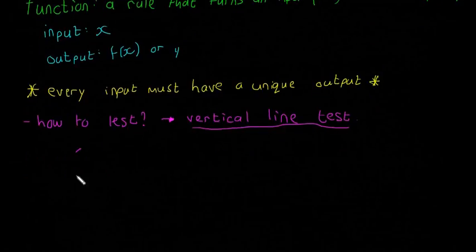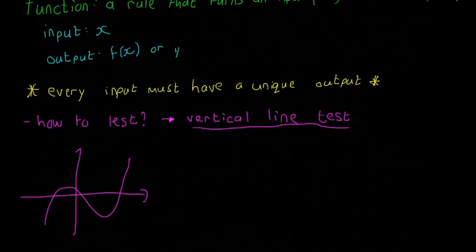So for example, if we draw this function here. Okay, so that's a cubic function. If we draw any vertical line, and it hits it only once.